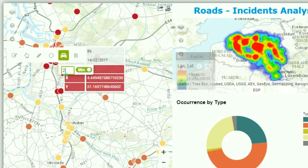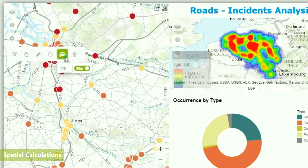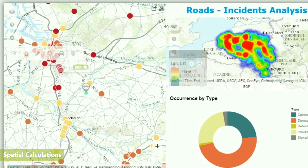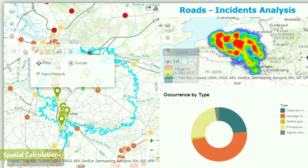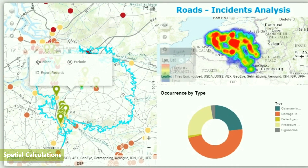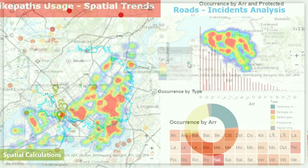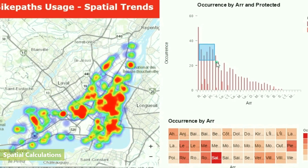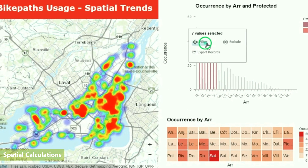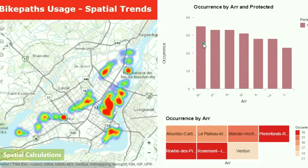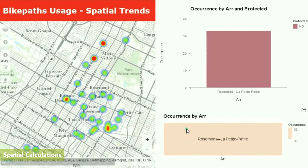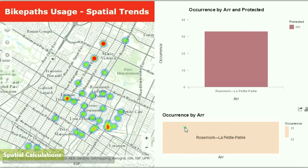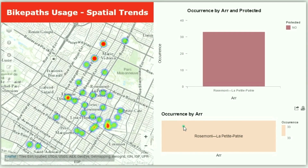Conduct a spatial analysis on the fly by using powerful tools like ISO distance or drive time selections to analyze — and not just visualize — key spatial trends and KPIs that are important to your business.